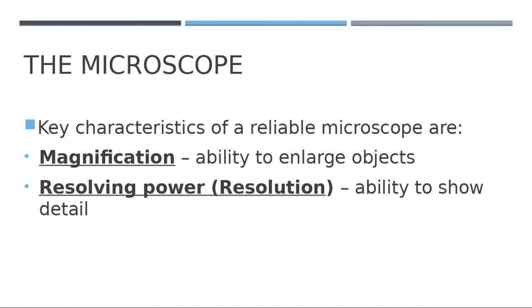The characteristics of a microscope tell us whether the microscope is good or not. The first characteristic is magnification — the ability to enlarge objects. Different types of microscopes have different magnification. For example, the electron microscope can enlarge objects up to one million times, while the light microscope is usually around one thousand to two thousand times.